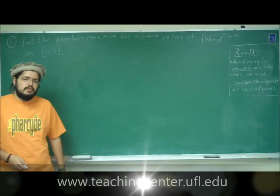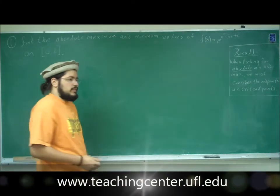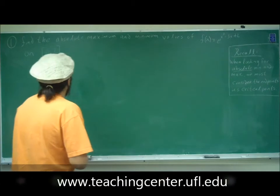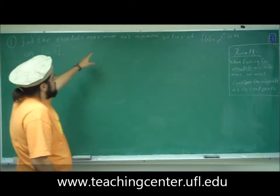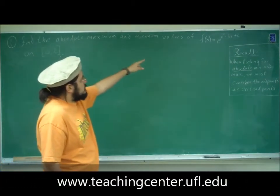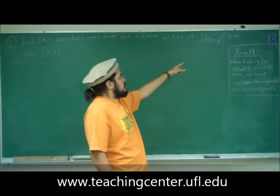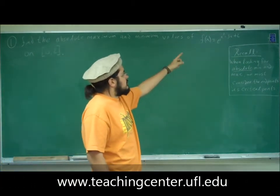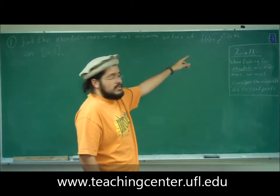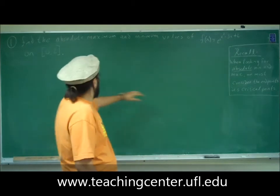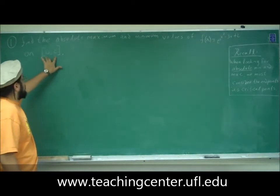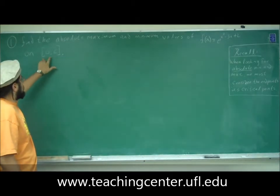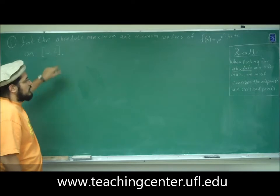This is problem 1 of exam 3. Problem 1 reads: find the absolute maximum and minimum values of f(x) = e^(x³ - 3x + 2) on the interval 0 to 2, including 0 and 2.